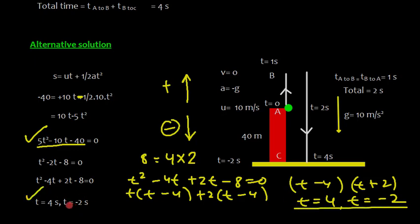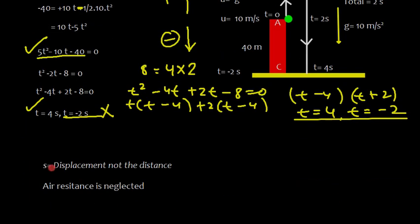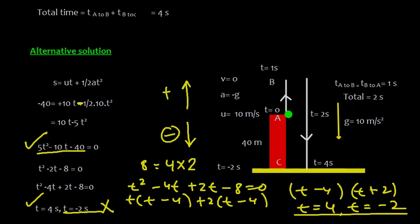We take t = 4 seconds and discard t = -2. Important: s represents displacement, not distance, and air resistance is neglected. The negative time t = -2 is mathematically valid but physically means 2 seconds before we threw the ball. Our answer is t = 4 seconds, matching our first method: 1 second from A to B plus 3 seconds from B to C.